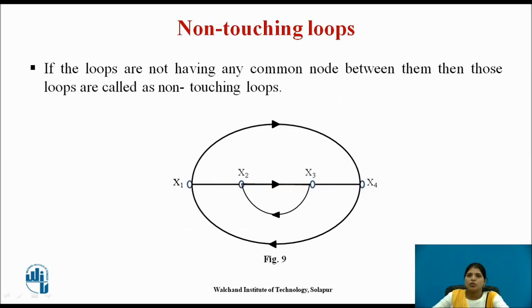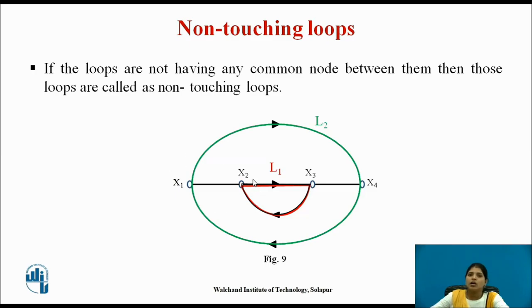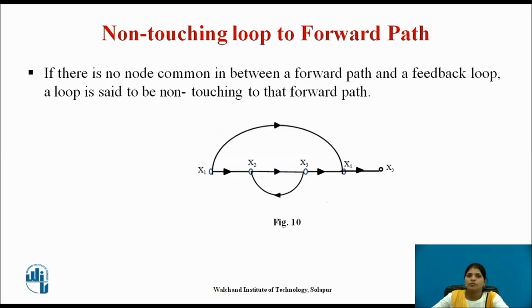Now, non-touching loops: if the loops do not have any common node between them, then those loops are called non-touching loops. Here there are two loops — loop 1 flowing through nodes x2 and x3, and loop 2 flowing through nodes x1 and x4. Since these two loops share no common node, they are non-touching loops.